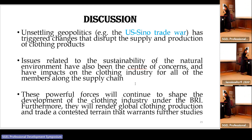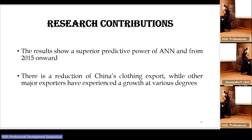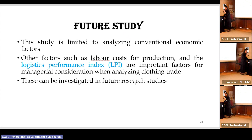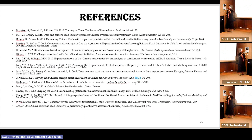Research contributions include: results showing the superior prediction power of ANN, proving that BRI has had a positive impact on the clothing industry from 2015 onwards. There is a reduction in China's clothing exports while other major exporters have experienced growth at various degrees. For future study, this research is limited to conventional economic factors, and other factors such as labor cost, production, and logistic performance index are important for consideration. These can be investigated in future research. That concludes the presentation — thank you for your attention and welcome any questions.